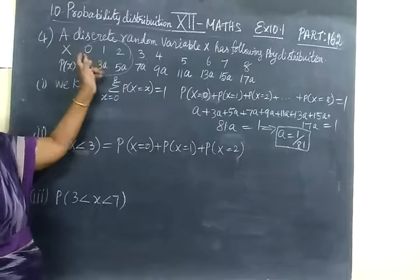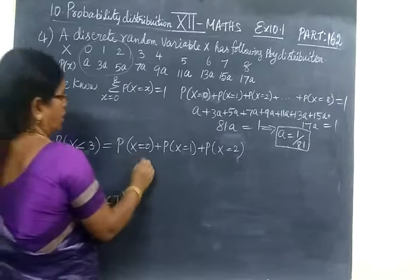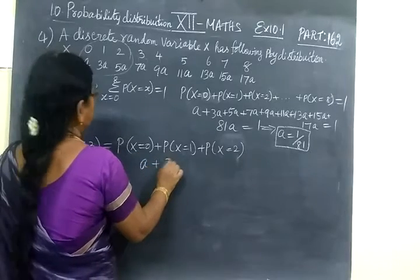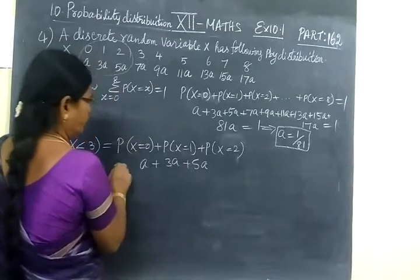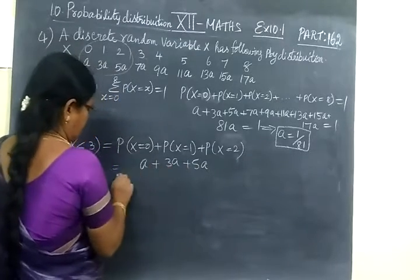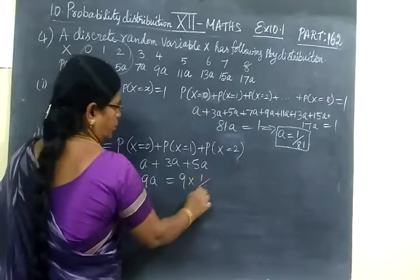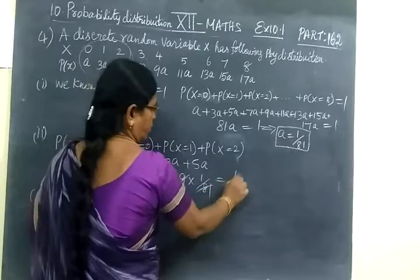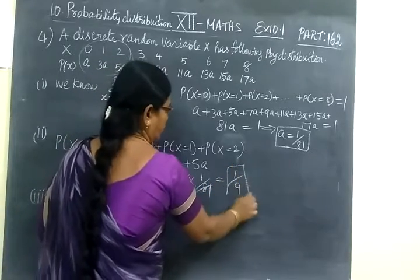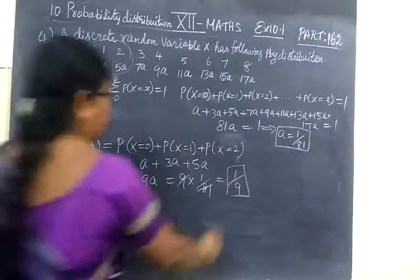Less than 3 means 0, 1, 2. So A plus 3A plus 5A. If you add it, you are getting 9A. So 9 into 1 by 81, the answer is 1 by 9.